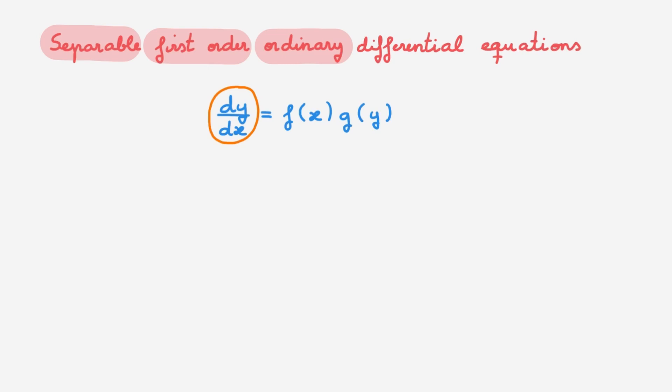The key to identify a separable equation is to figure out whether it can be written in this form, where the right-hand side is the product of two functions f and g, where f only depends on x and g only depends on y. The name separable will become really clear later on in this video. In practice, how do we know if a given differential equation is separable? You need to try standard algebraic manipulations to see if you can transform it to this form. If you can, then you have a separable equation.